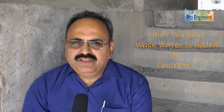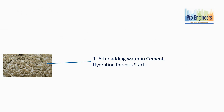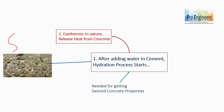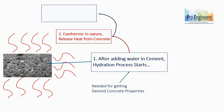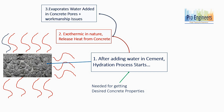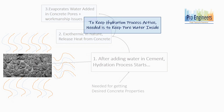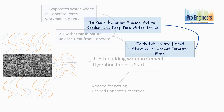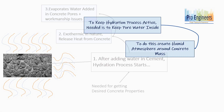Curing is the last step in the process of concrete construction. Whenever water is added to concrete, the hydration process starts. This process is exothermic and liberates heat, which results in evaporation of water from the concrete mass. In order to ensure the hydration process continues, it is necessary to prevent evaporation loss from the capillary pores of concrete, and hence it is necessary to maintain a moist atmosphere around the concrete mass.